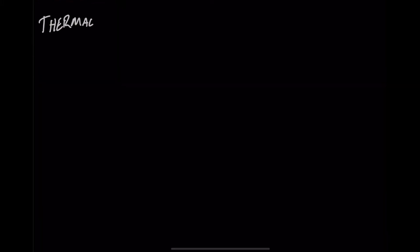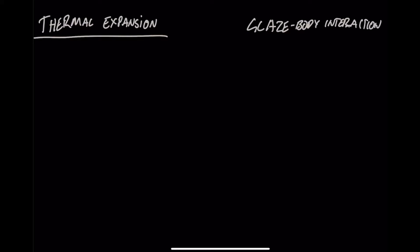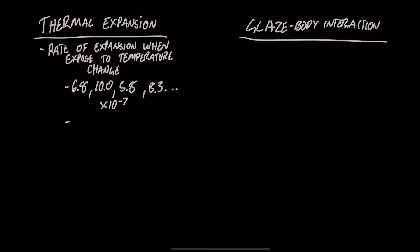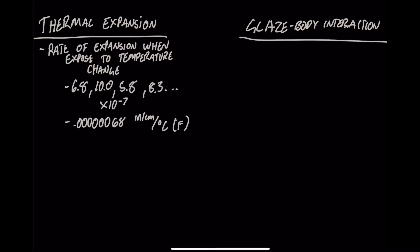The two topics that involve those four are thermal expansion and glaze body interaction. Thermal expansion is a rate of expansion when exposed to temperature change. Typically you're going to see these numbers as things like 6.8, 10.0, 5.8, 8.3 — but really what these numbers are is all of those values times 10 to the negative 7, meaning it is expanding at 0.00000068, typically in inches or centimeters per degree Celsius, though sometimes Fahrenheit.